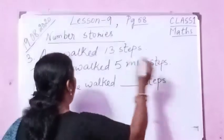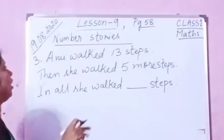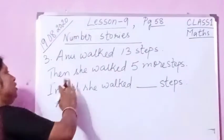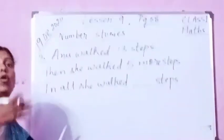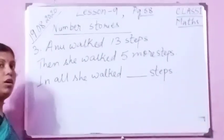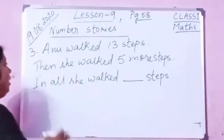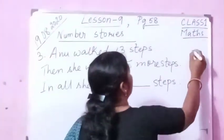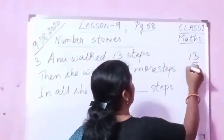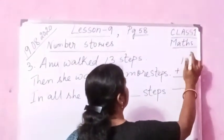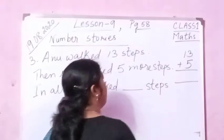Now you see here — in the question it is given 'in all.' Anu walked 13 steps, then she walked 5 more steps. Whenever 'in all' or 'altogether' is given, you have to add. So in all she walked dash steps — we are going to add 13 plus 5.